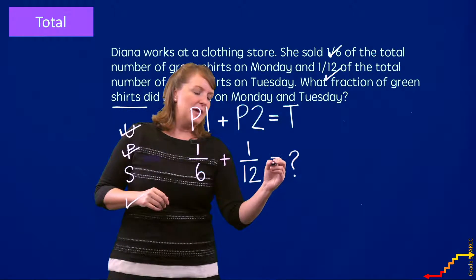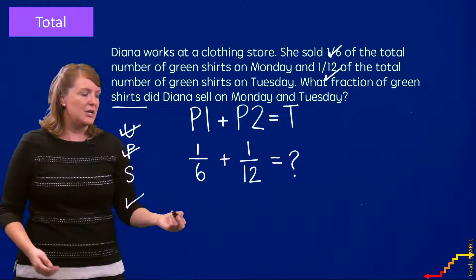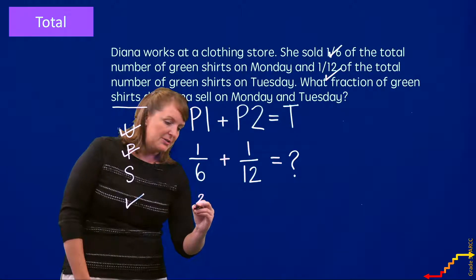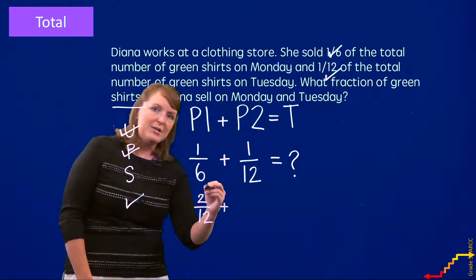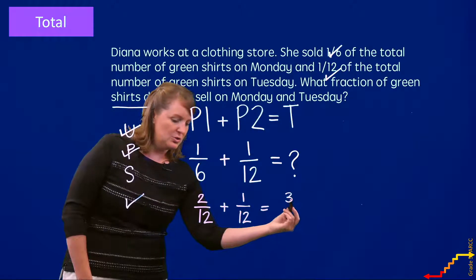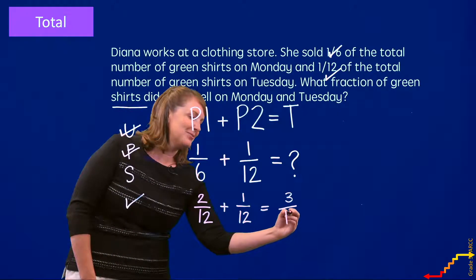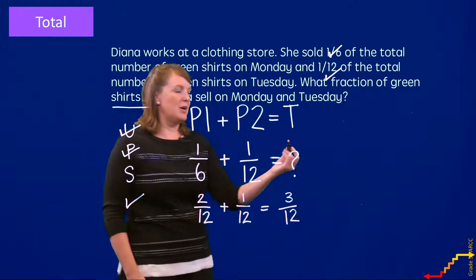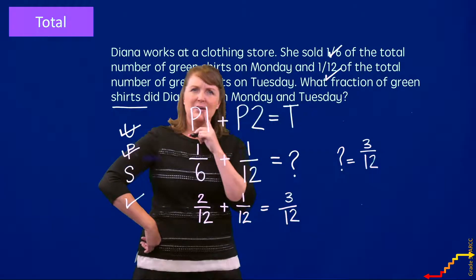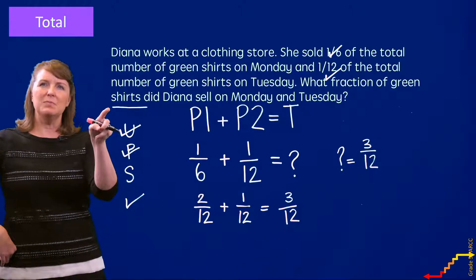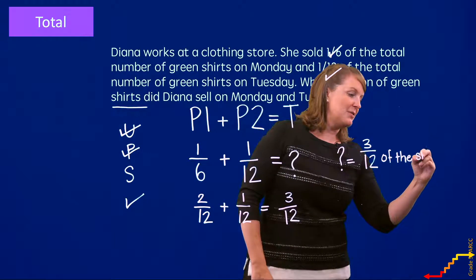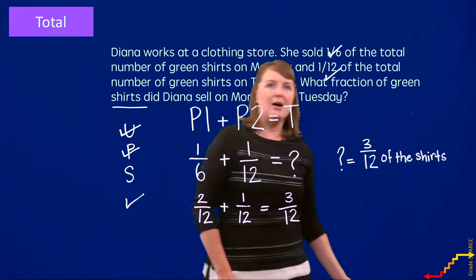Now I'm going to put in my signs and figure out how to solve this equation. If I add one sixth plus one twelfth, that gives me the total. I'll use common denominators: one sixth is equivalent to two twelfths, and two twelfths plus one twelfth is three twelfths. So the question mark equals three twelfths. And I always like to label my numerical answer — she sold three twelfths of the shirts. Notice I underlined 'shirts' at the beginning and it's coming back at the end to help me label.